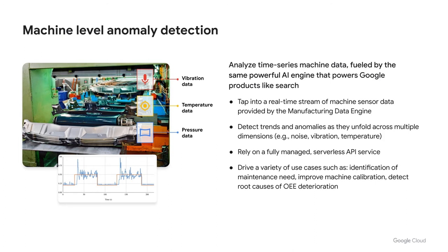Another important area: manufacturing is all about machines. Google Cloud has been able to use existing technology — for example, a time series API powering Google products like Search. We've taken that technology and pivoted it into manufacturing. This can detect trends and anomalies in real time. As data flows into the cloud, we can monitor it, detect anomalies — whether a temperature sensor is out of spec, pressure data is dropping, or vibration data is anomalous. This runs on a fully managed service API system, so scale is not a challenge.